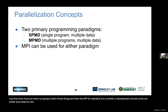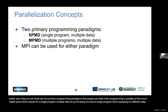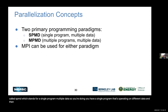There are two primary programming paradigms used when programming in parallel. The first is SPMD — single program, multiple data — where you have a single program operating on different data. The second is MPMD — multiple programs, multiple data — where you have multiple programs operating on different data. You can use MPI for either of these paradigms.